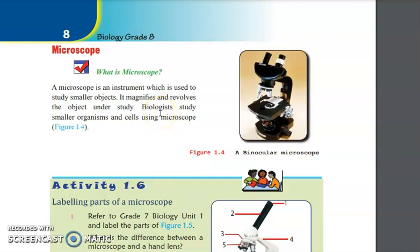Let's look at the technological products starting from microscope. Microscope is an instrument used to study smaller objects. The first function is magnification - it magnifies what we can't see with our naked eyes.